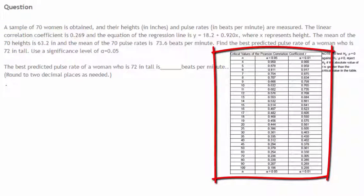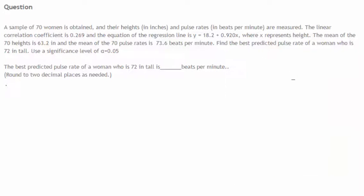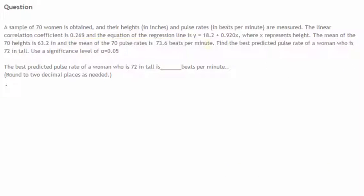If there is a correlation, then the best predicted value will be the value arrived at by using the equation of the regression line. However, if there is not a linear correlation — as determined by comparing the correlation coefficient against the critical value — then the best predicted y value will be the average or mean of the y values given in the problem.